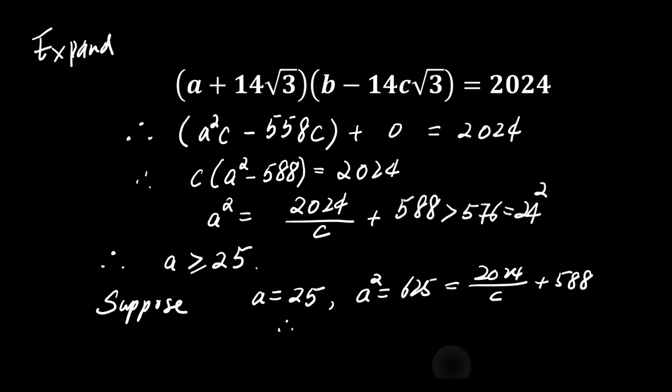2024 divided by c equals 37. This gives c equals 2024 divided by 37. Since 2024 is not divisible by 37, c is not an integer. Therefore, a equals 25 does not yield a valid solution.